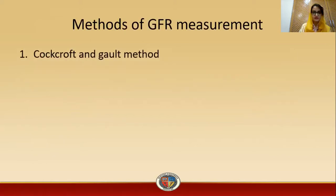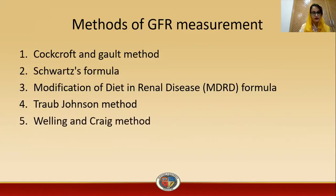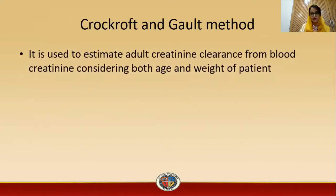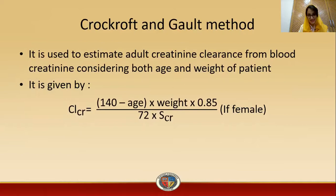There are five methods for measurement of GFR: Cockcroft-Gault method, Schwartz formula, Modification of Diet in Renal Disease (MDRD) formula, Sirsbach-Nelson's method, and Billing and Craig method. The Cockcroft-Gault method estimates adult creatinine clearance from serum creatinine considering both age and weight. The formula is: creatinine clearance = (140 − age) × weight × 0.85 divided by 72 × serum creatinine, where 0.85 is the factor for females.